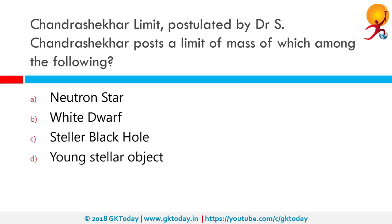The Chandrasekhar limit postulated by Dr. S. Chandrasekhar posits a limit of mass on which among the following? The correct answer is white dwarf. In 1931, astrophysicist Subramanian Chandrasekhar theorized that a star would not form a stable white dwarf at the end of its life if its mass was greater than 1.44 times the solar mass. This is known as the Chandrasekhar limit, above which the white dwarf will explode as a type 1a supernova. This work fetched him the Nobel Prize in 1983.